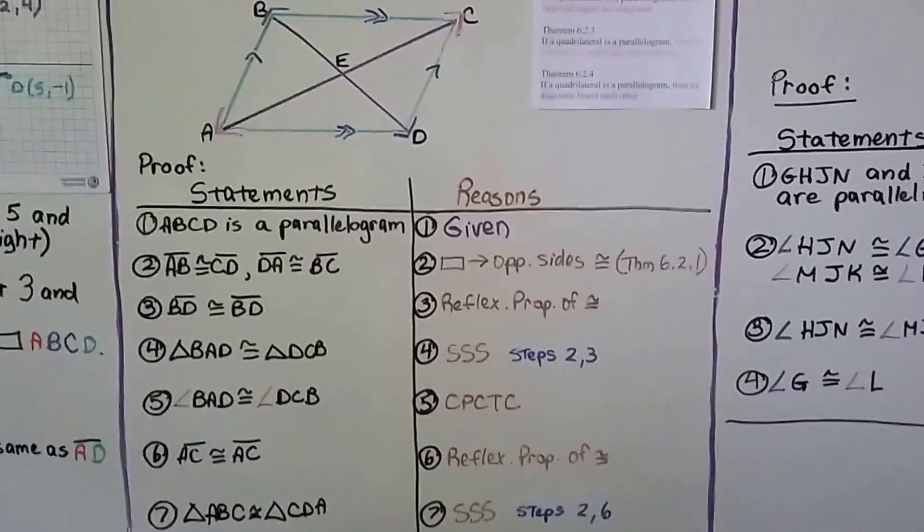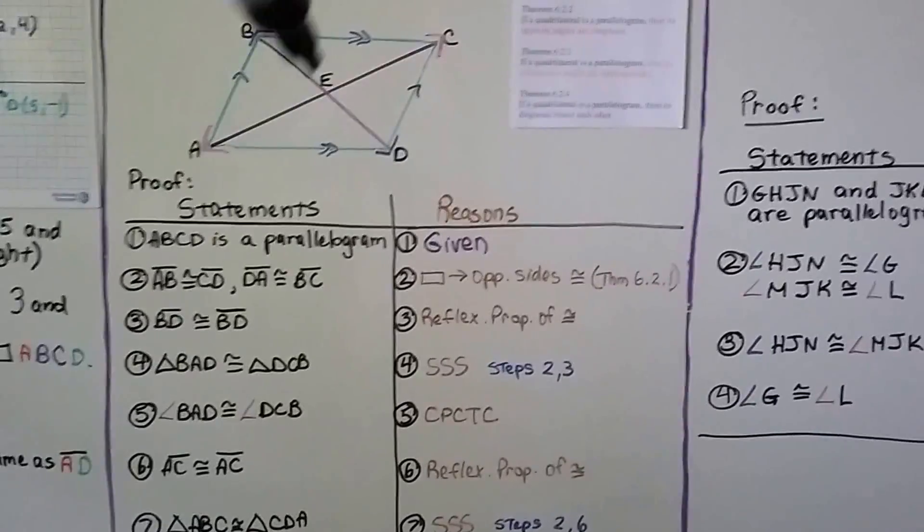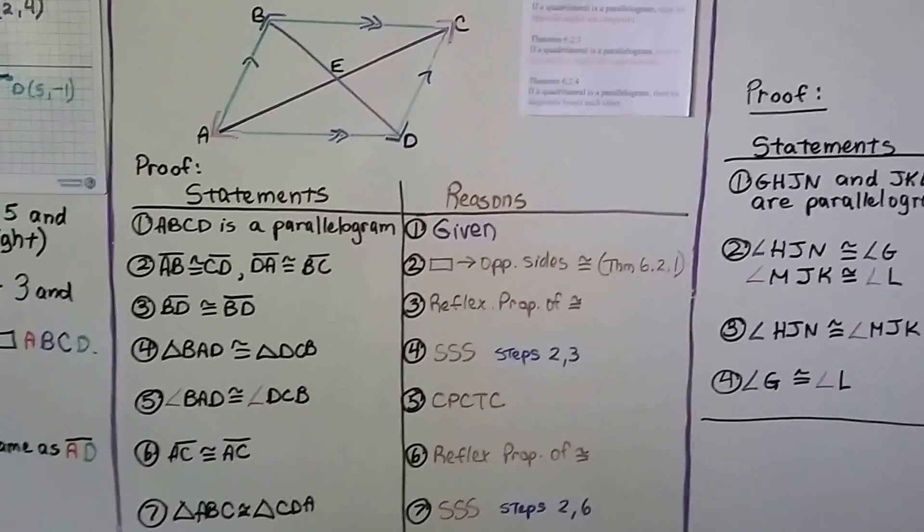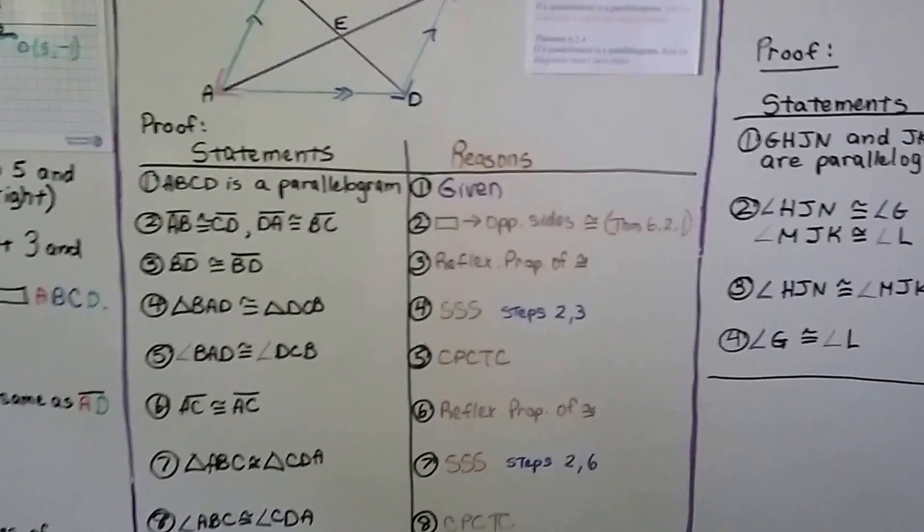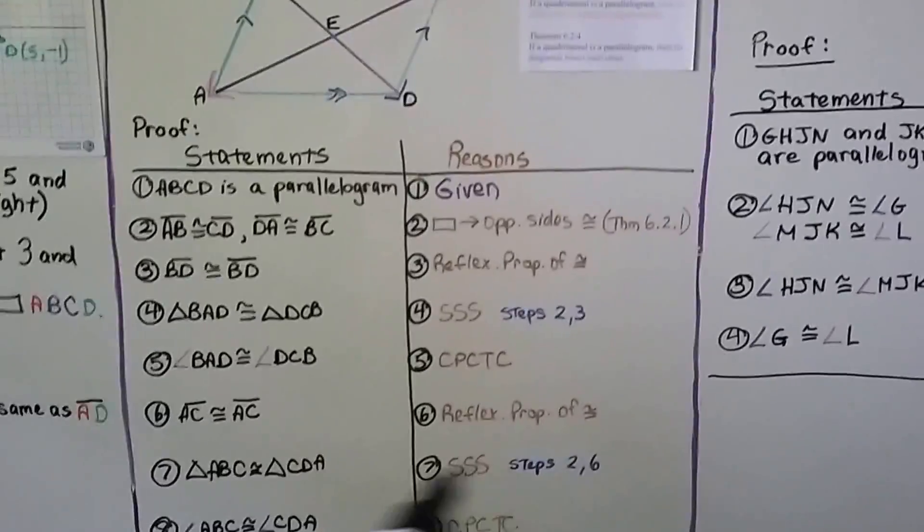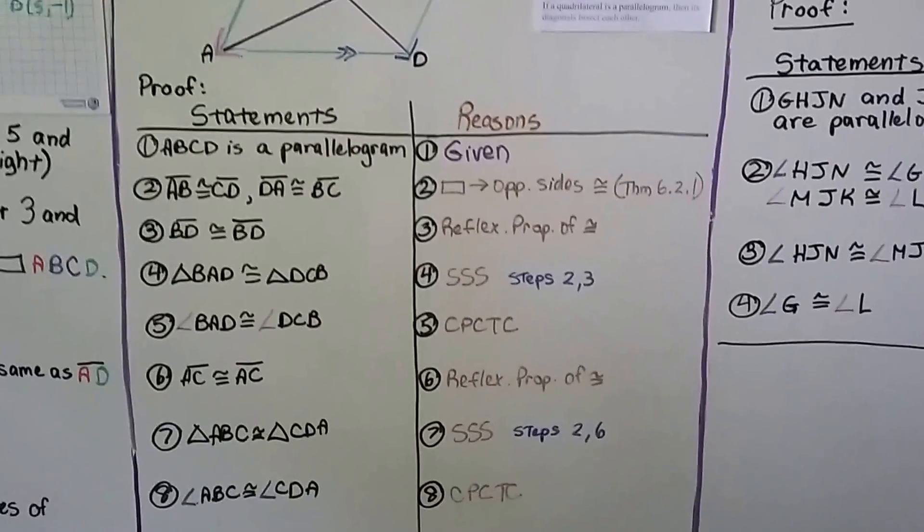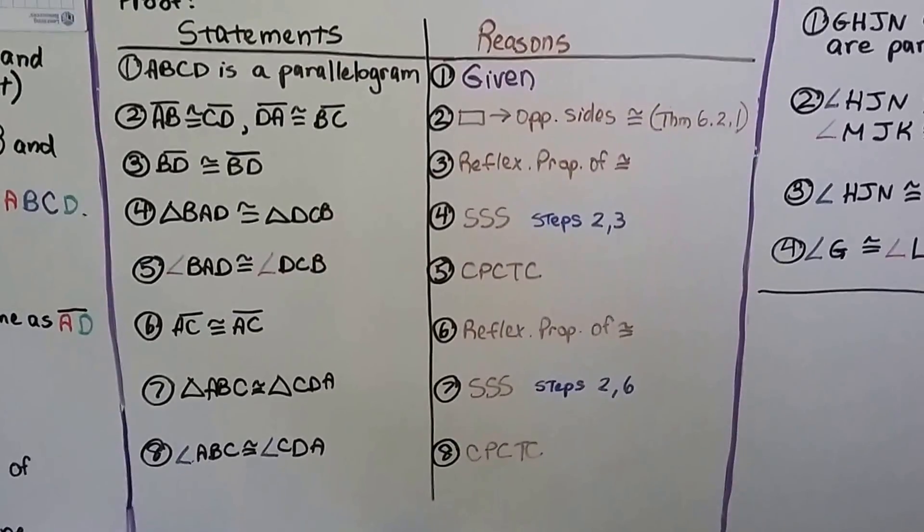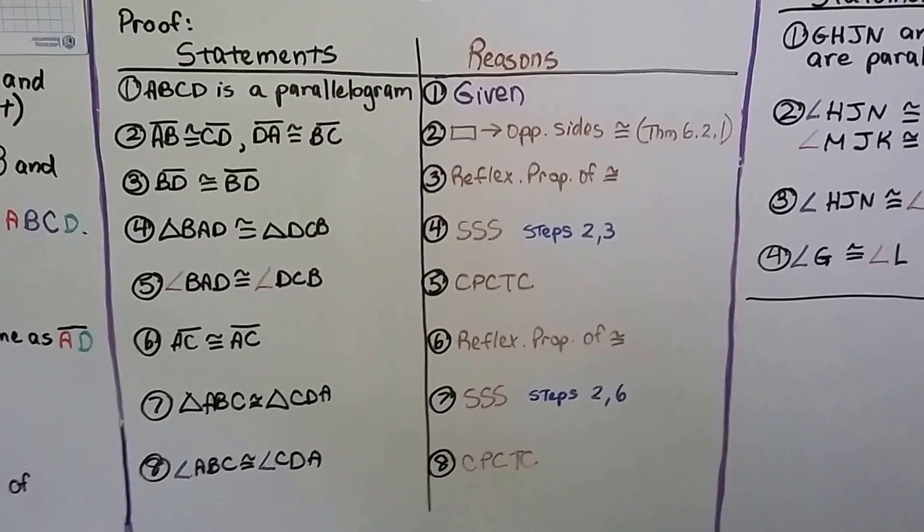Now let's do the other one. We've got AC is congruent to AC. Now we've got this diagonal. And it's a hypotenuse for this triangle, and it's a hypotenuse for this triangle. And that's the reflexive property of congruence because it shares hypotenuse. Number 7 says triangle ABC is congruent to triangle CDA. And that's from side, side, side from steps 2 and 6. We have a side, a side, and a side. Which brings us to number 8, that ABC is congruent to angle CDA because of CPCTC. We have three congruent sides, so the congruent parts of congruent triangles are congruent.